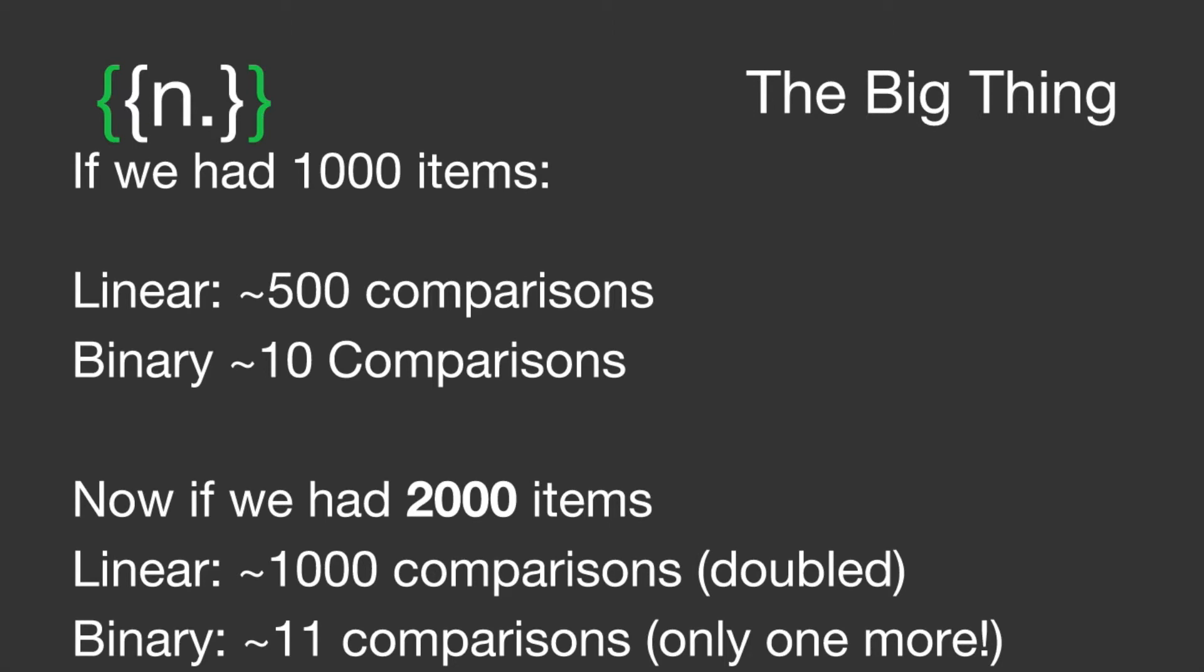Now if we double the amount of items we have in the list, linear doubles. It goes up to up to a thousand items, but the binary we only add one more comparison because it has to halve, which is the opposite of doubling. So it takes up to on average 11 comparisons. This power is incredible with binary search and with the divide and conquer nature of these algorithms.